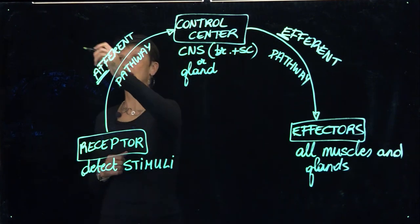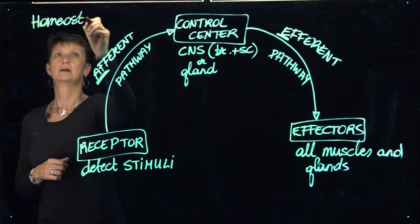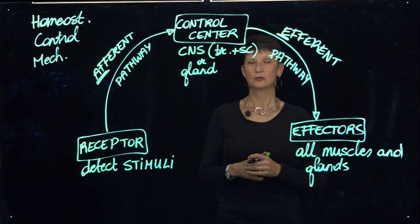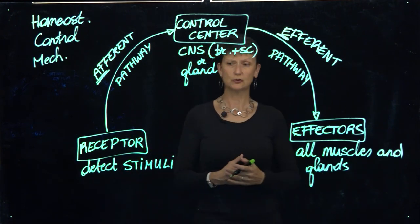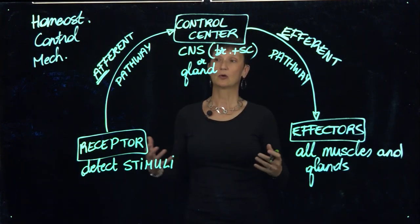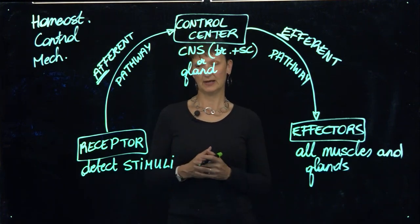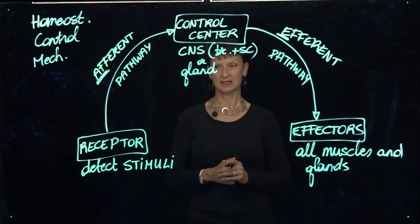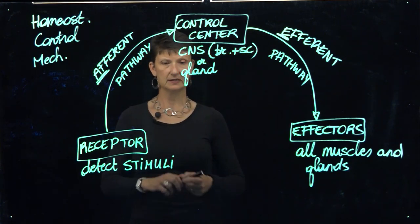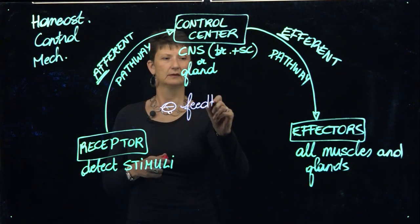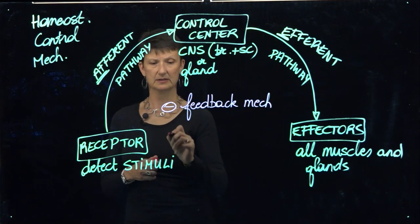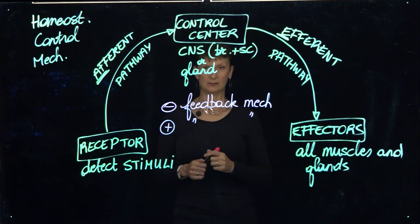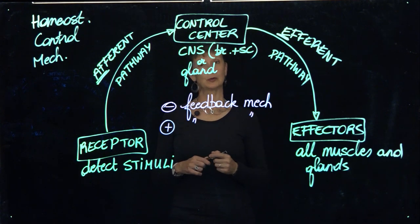We refer to this whole flowchart as a homeostatic control mechanism. Throughout anatomy and physiology one, anatomy and physiology two, and pathophysiology, you'll come across two different feedback mechanisms — specific types of control mechanisms that help maintain homeostasis in the body — referred to as negative feedback mechanisms and positive feedback mechanisms, with negative feedback mechanisms being the most common in the body. This wraps up our discussion of the homeostatic control mechanism.